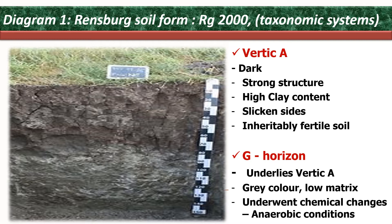The vertic soil type was used as a test for the experiment, where it was found that the diagnostic horizon of the soil was vertic — very dark topsoil, strong structure, very high in clay content with silicon sides — and the soil is inherently very fertile when subjected to laboratory testing. Subsequent to the vertic A horizon was a G horizon, which had a very gray color, low matrix according to the soil Munsell color chart.